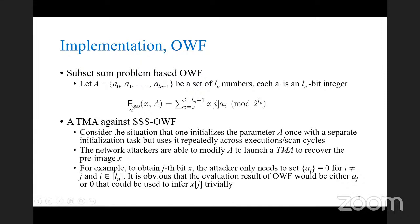An example of implementation: a subset-sum-based one-way function. This one-way function has a parameter A consisting of LN numbers of LN-bit values X. Each bit of X is used to determine whether the corresponding parameter a_i will be added. An important study is the importance of hard-coding the parameters. Consider a situation where one initializes parameter A once with a separate initialization task, but uses it repeatedly across execution scan cycles. However, when such an initialization task is done, network attackers can modify A to launch a tag manipulation attack to recover the pre-image X.